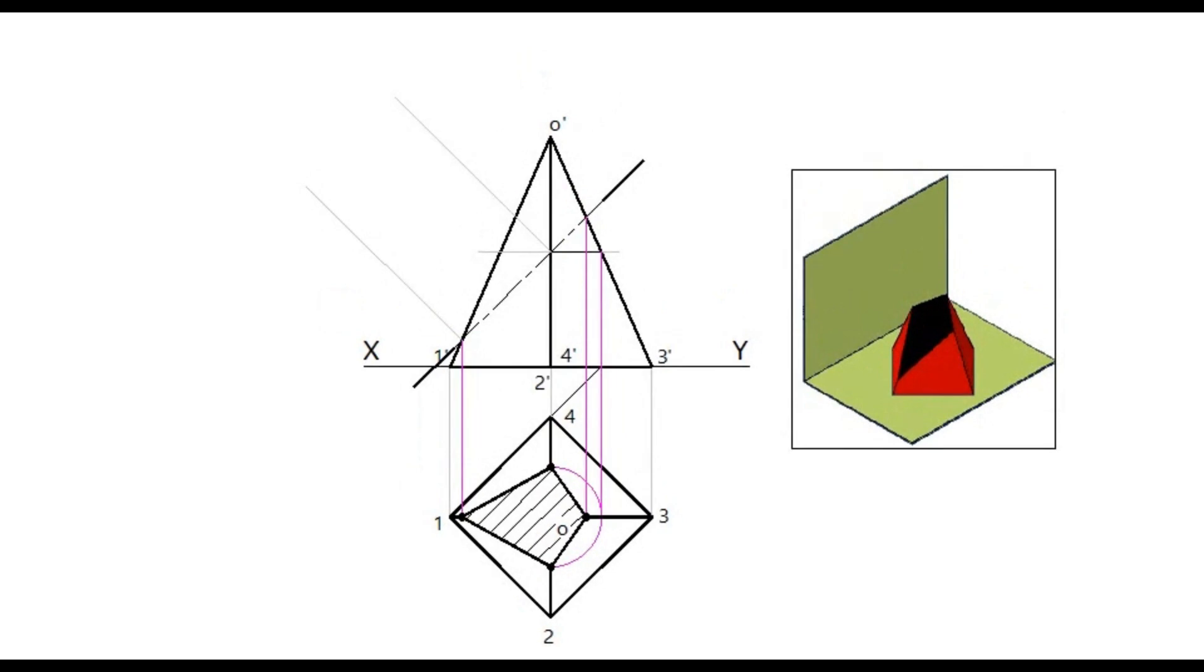To draw the true shape of the section, draw a perpendicular line to the cutting plane from the points wherever the cutting plane cuts the pyramid.